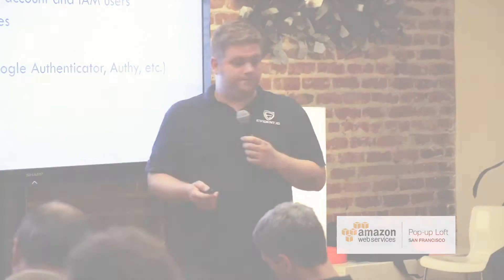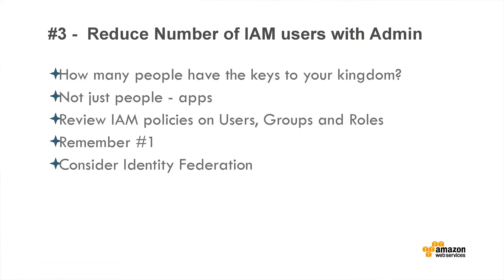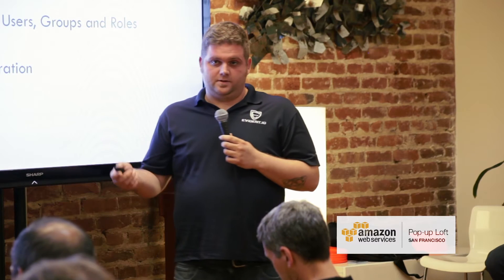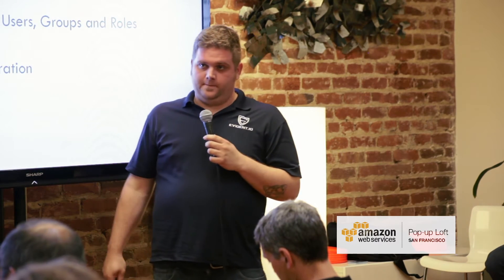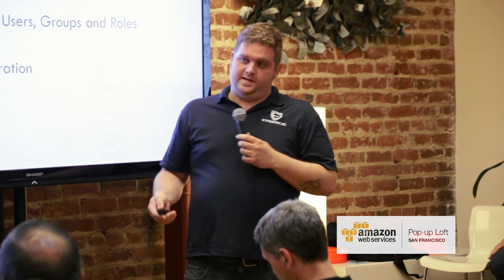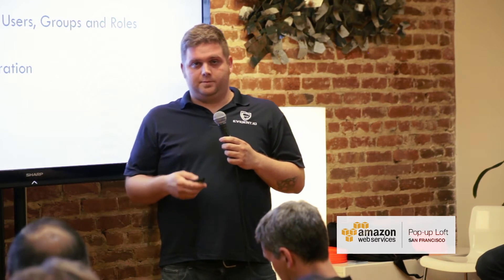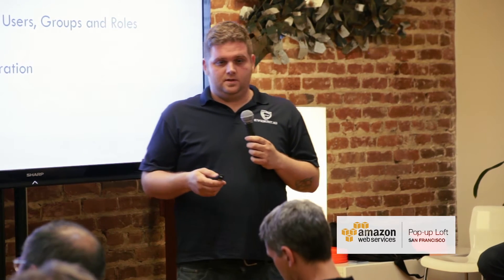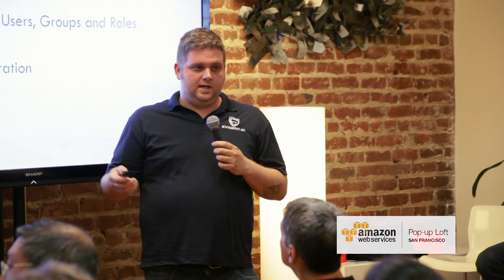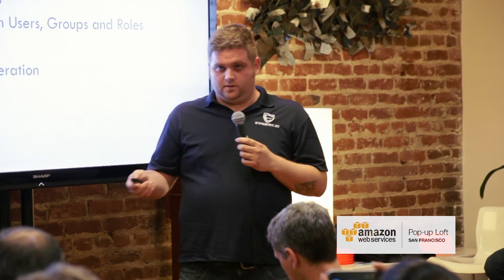Number three: reduce the number of IAM users with administrative privileges. Not everyone in your development or DevOps organization needs full, unrestricted access to the Amazon API. If you have a team managing EC2 and a separate DBA group managing RDS, set up policy so DBAs can only touch RDS and EC2 managers can only manage EC2 instances.